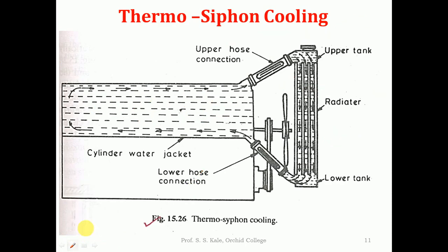Now let's see how it works. When the engine starts, fuel gets burned. As the fuel burns, the water around the piston cylinder arrangement gets heated and its temperature increases. As temperature increases, the water becomes lighter — it reduces its density. When water becomes lighter, it tries to move in the upward direction, and through the upper hose it moves toward the radiator. Hot water accumulates in the upper zone of the radiator.